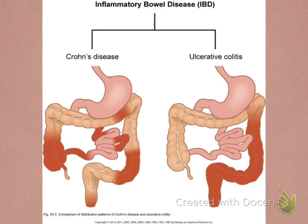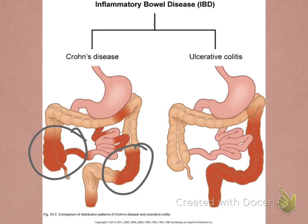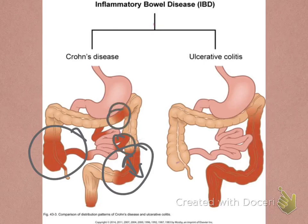When we compare the two, Crohn's disease can happen anywhere in the GI tract. It's most commonly going to occur in the terminal ileum and the colon. The inflammation involves all layers of the intestine, and there can be areas where there's normal bowel between the diseased portions.